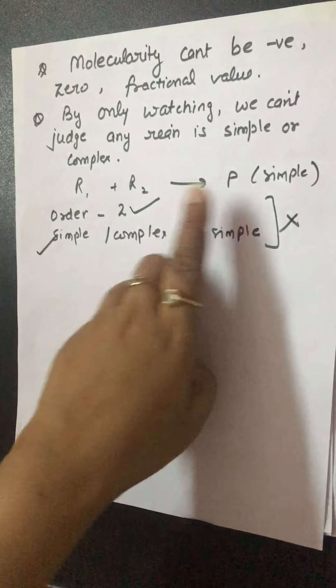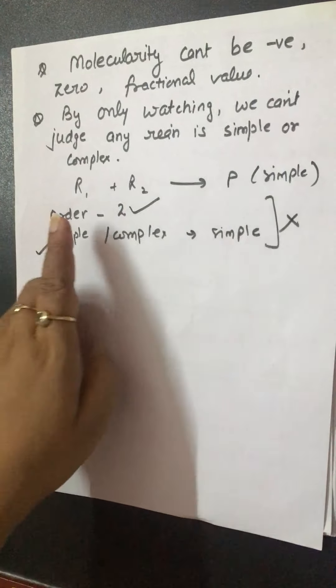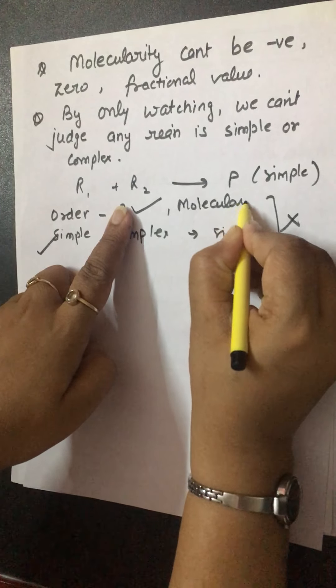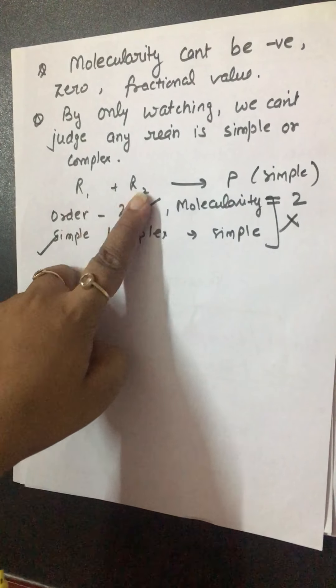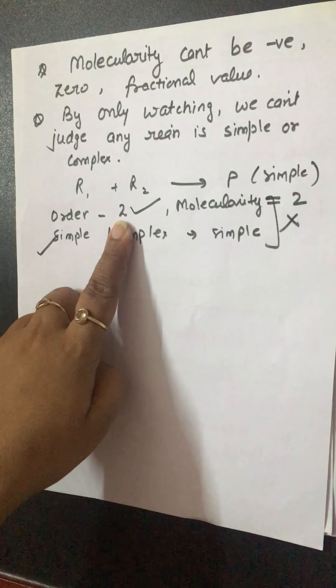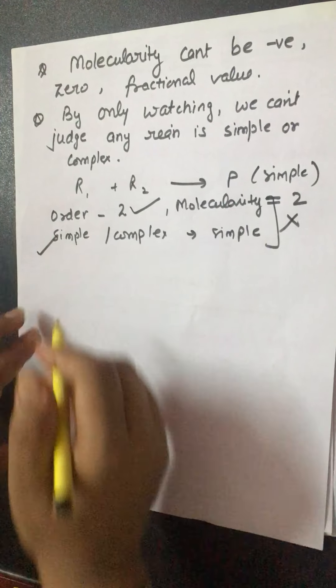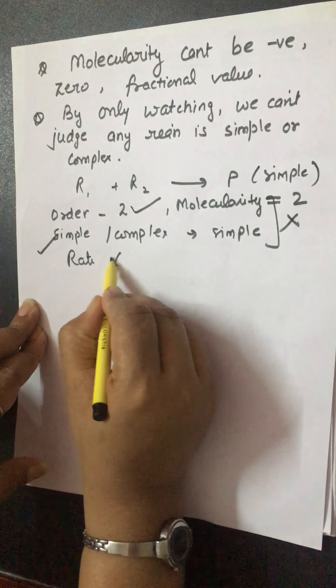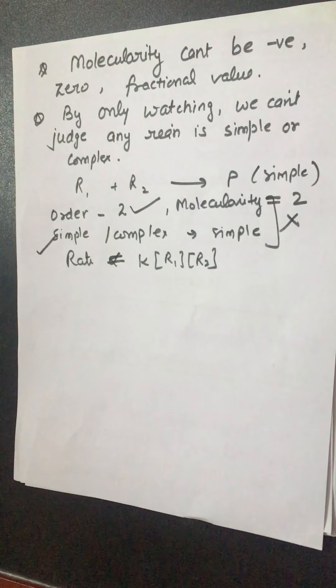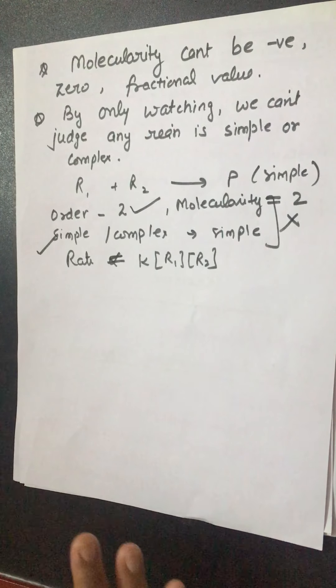For a simple type of reaction like this, if 'simple' is written, then molecularity is the total number of reacting molecules — meaning 2 in this case. If molecularity is 2, order will also be 2. And for this, the rate will equal K multiplied by the concentrations of the reactants in the expression.